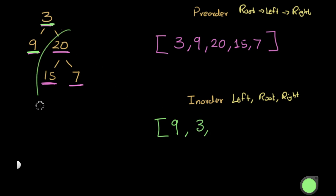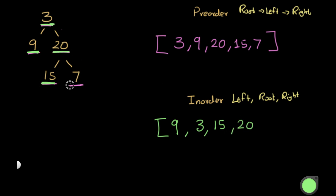Now we do everything to the right of 3, which is the right subtree rooted at 20. At 20, before writing it we go left to 15. At 15, left is empty, so we write 15, then right of 15 is also empty. Now we write 20. Then we go right of 20 to 7 — left of 7 is empty, we write 7, right of 7 is empty. So our in-order traversal is: 9, 3, 15, 20, 7.